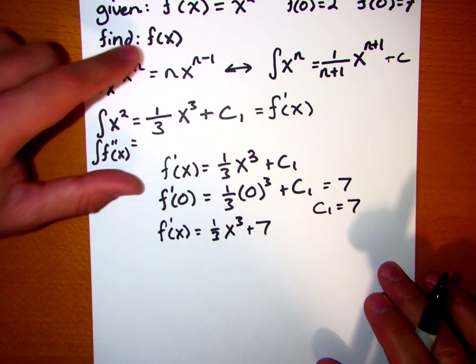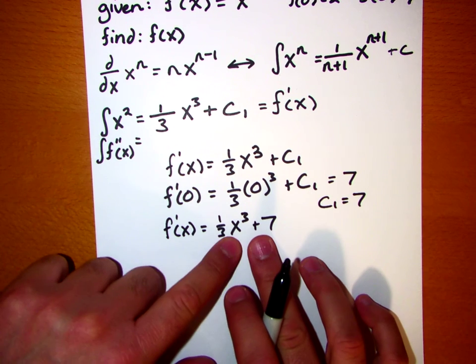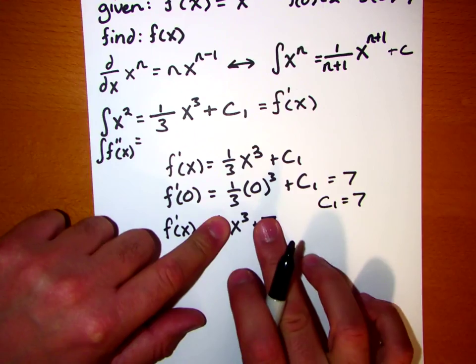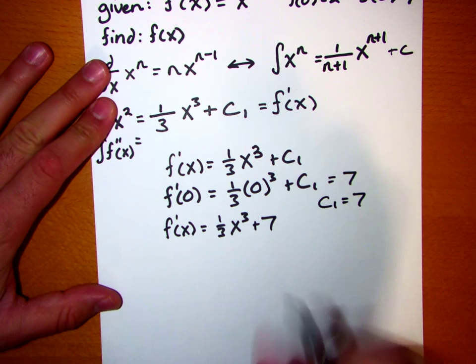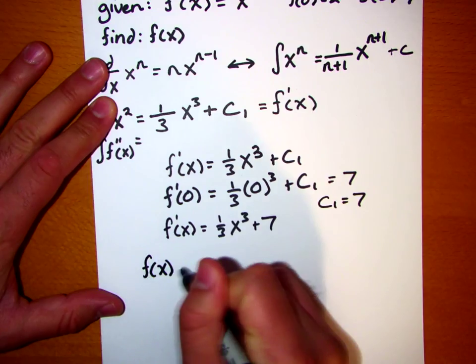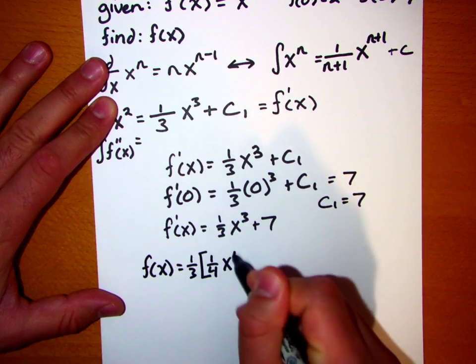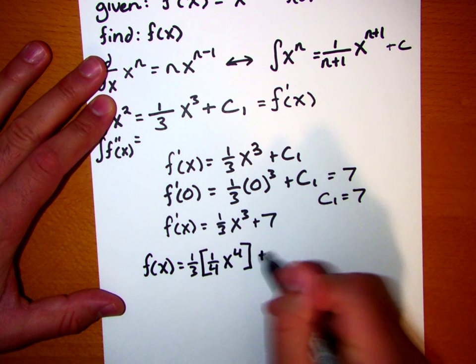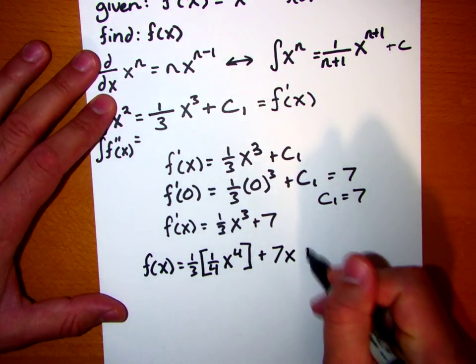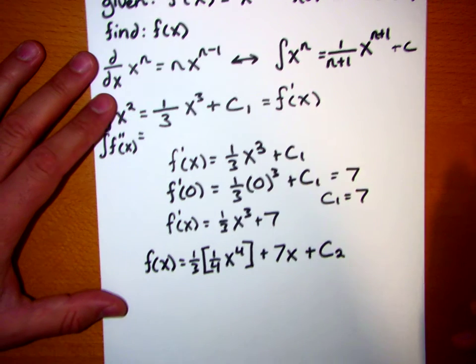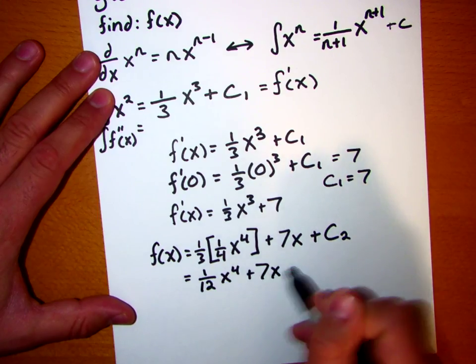Alright, but we're not quite done yet, because really we want to find f of x. Well, simple enough, all we have to do is integrate one more time. And the integral of, let's just take a look at this x cubed here for a moment. Using our power rule, we can see that the integral of x cubed is just going to be 1 fourth x to the fourth. And if we combine that with the 1 third that's already there, we see that f of x is going to be equal to 1 third times 1 fourth x to the fourth. Now remember, we also have to integrate the 7 here. The integral of 7 with respect to x is just equal to 7x. And one more time, we have to include a constant, and there's our c2. Alright, well this simplifies a little bit to 1 twelfth x to the fourth plus 7x plus c2.